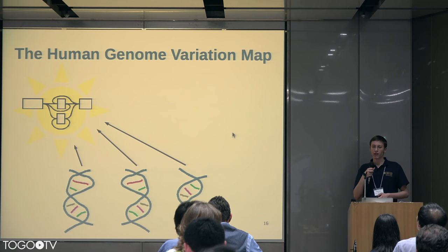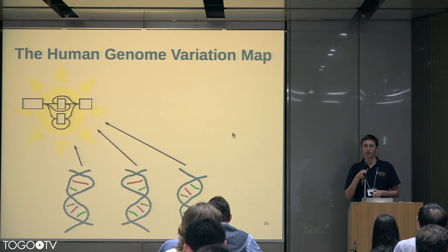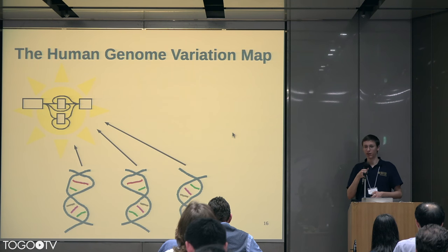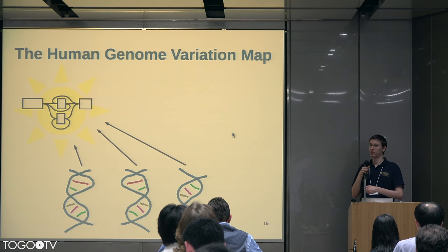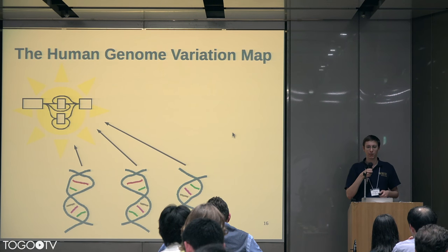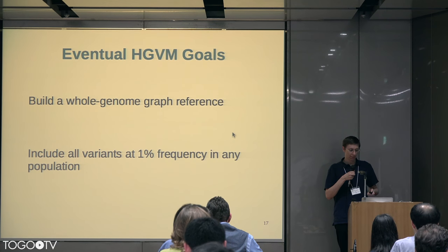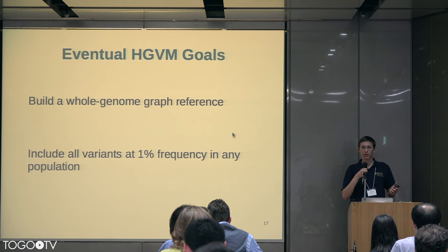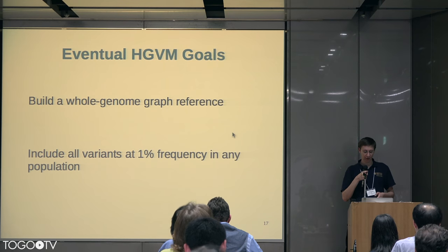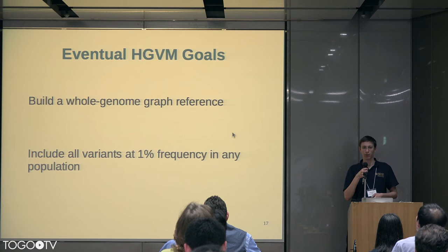The project I'm working on, the Human Genome Variation Map, is a project to replace the linear reference with a reference based on a graph, so that we can all do graph-based genomics, which is much cooler than boring linear genomics. We'll incorporate more variation and have various benefits like lower allele bias. We want to build a big whole-genome graph reference that includes all variants at 1% frequency in any population.